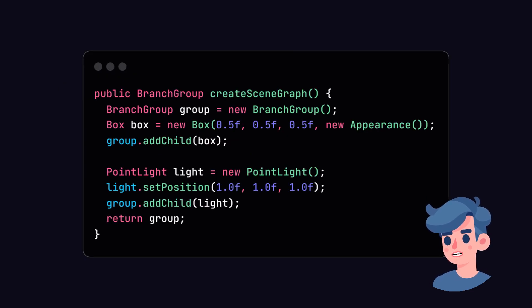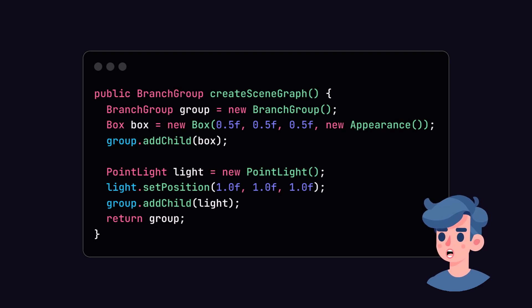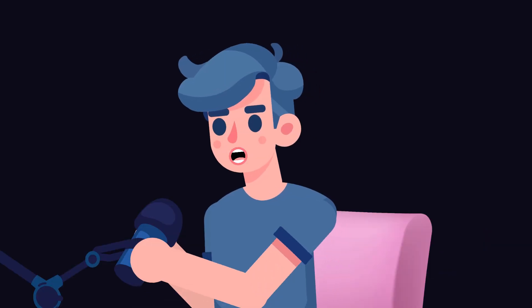Let's also add a simple light source to illuminate our shape. Java 3D uses light sources to enhance the visual effects of objects in the scene. We can add a PointLight and set its location — here's how you do it. This point light will illuminate the surroundings of the box we created.